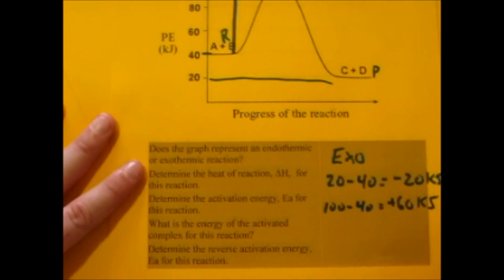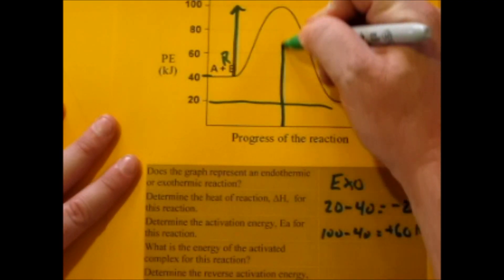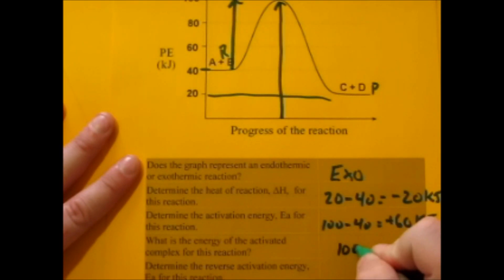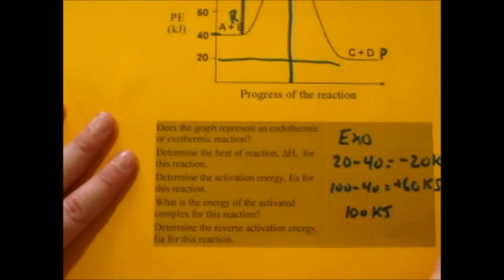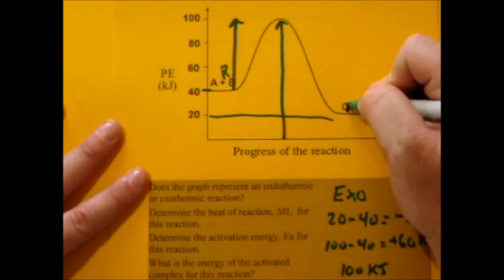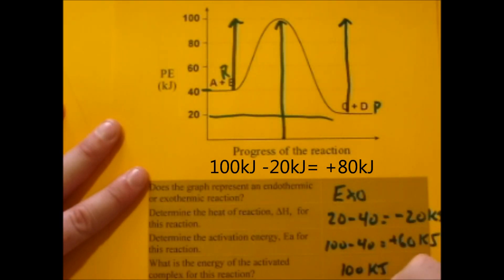The activated complex is the maximum energy achieved, so go right to the top — that's 100 kilojoules. For the last question, determine the reverse activation energy. Starting from the products, we have to go all the way up to the top: 100 minus 20, which is 80 kilojoules to reverse this reaction.